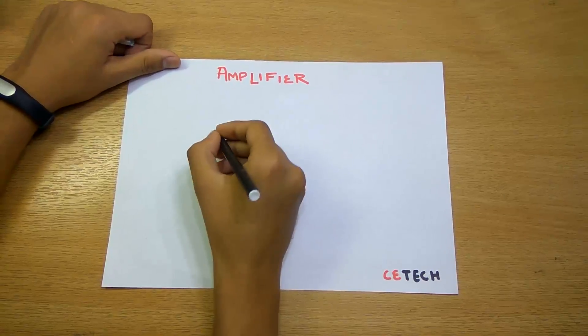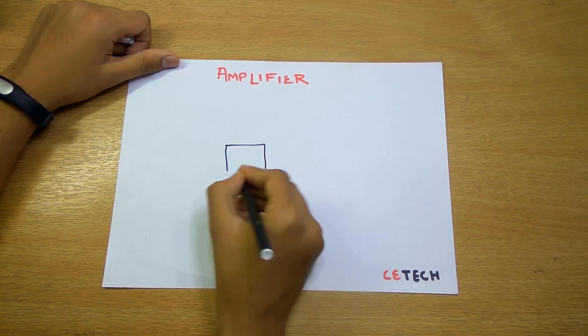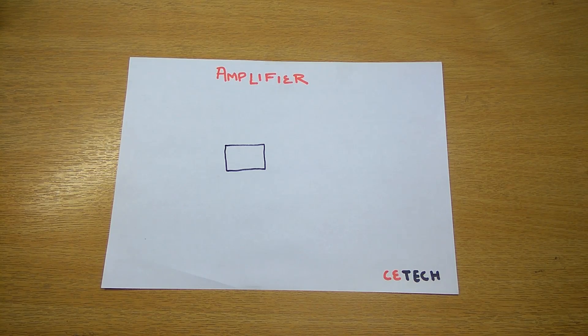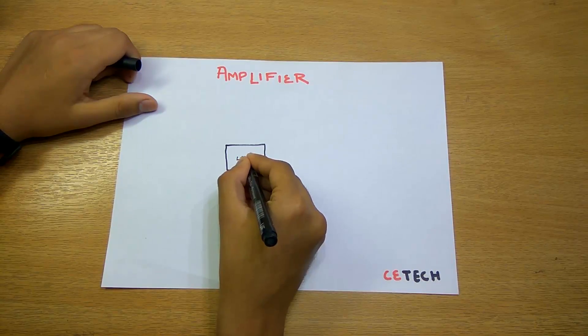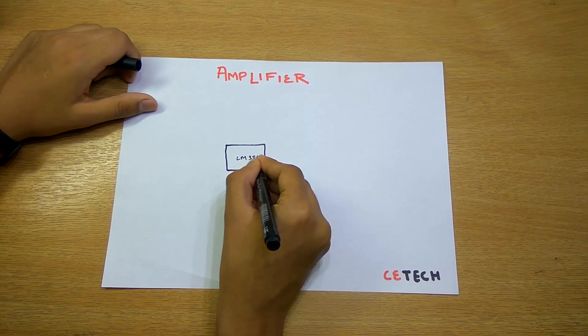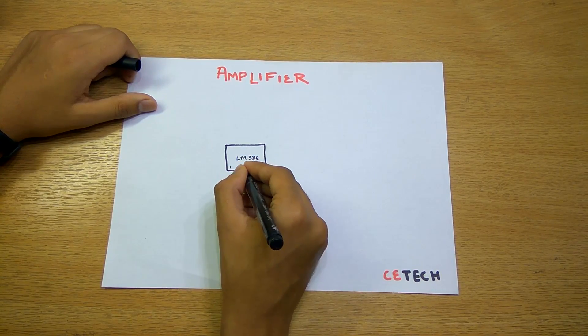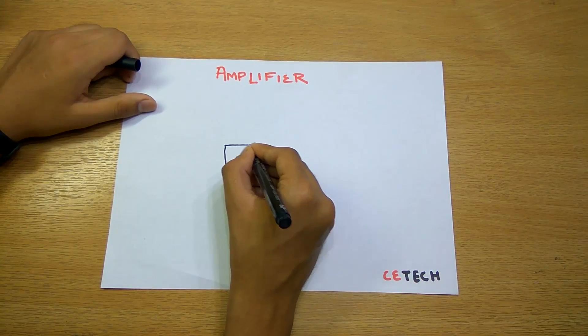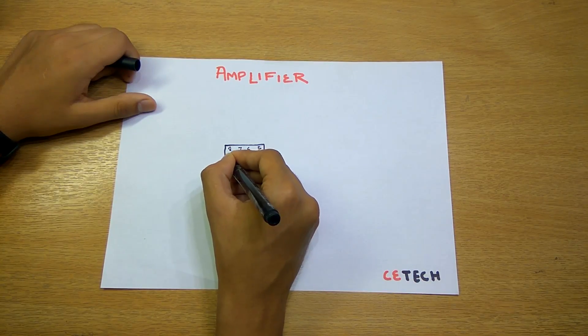This is the IC right here, the LM386, and we have four pins on each side. So one, two, three, four, five, six, seven, eight. And we have a groove right here for the identification of pin number one.